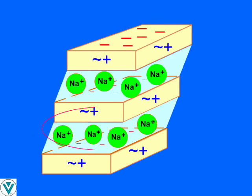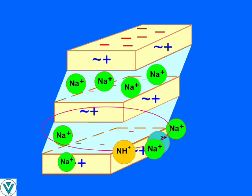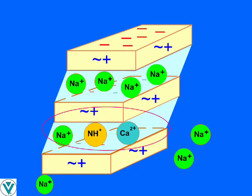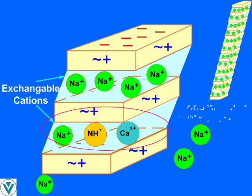The net negative charge on the platelet is balanced by sodium ions. These charge-balancing ions are associated with platelet faces and are called exchangeable, since they can be readily substituted with other cations. A single clay granule is composed of thousands of these sandwich platelets with exchangeable cations and a layer of water between each.